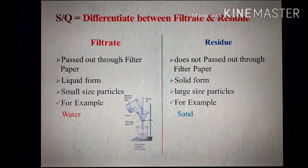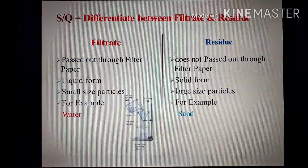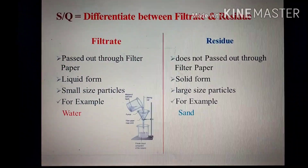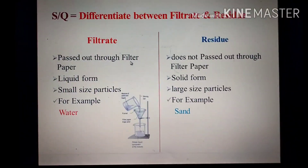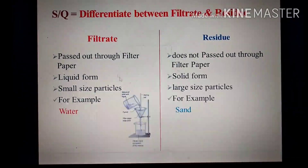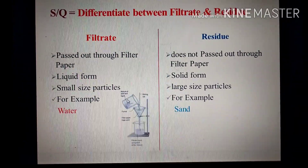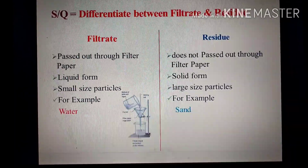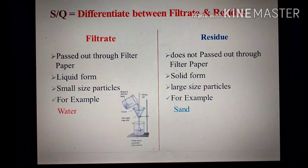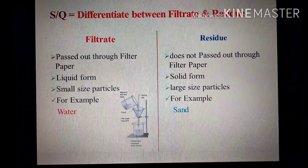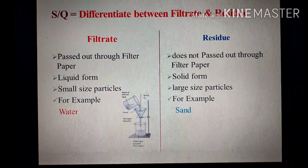یہاں پہ ایک important question پوچھا جاتا ہے: differentiate کریں between filtrate and residue۔ Filtrate وہ components ہوتے ہیں جو filter paper سے pass out ہو جاتے ہیں — that is known as filtrate۔ جیسے یہاں sand and water کا sample ہے — جو liquid form میں components ہیں، small size والے جیسے کہ water، وہ filtrate ہو جاتے ہیں۔